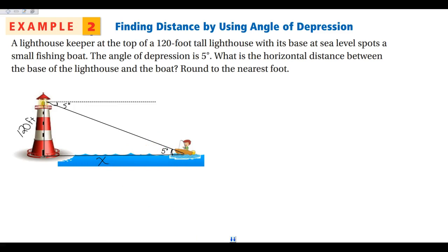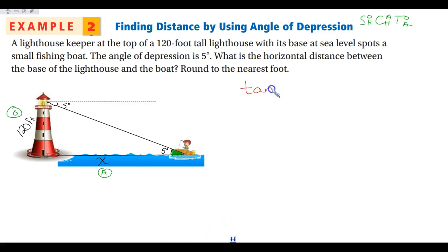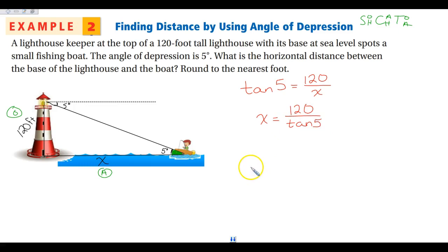From here, it's all trig — what we've been doing for the last two lessons. Looking at this angle, 120 is my opposite side and X is my adjacent side. Opposite over adjacent is the tangent, so tangent of five degrees equals 120 over X. My variable is in the denominator, so X equals 120 divided by the tangent of five. Rounding to the nearest foot, I get 1,372 feet.